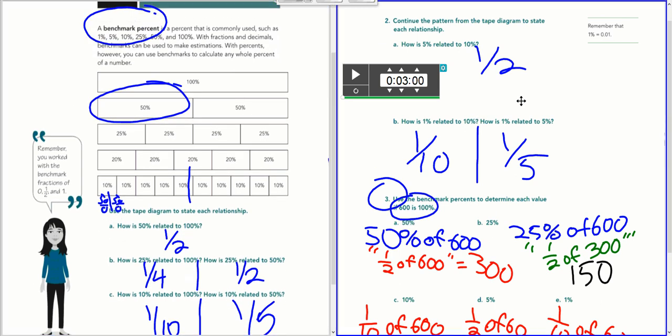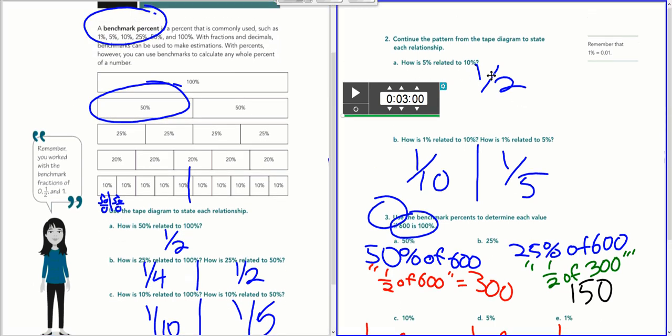And then we continued on with this. How is 5% related to 10%? Well, that's not over here, but you could continue to draw this picture. You could divide 10% into two pieces, 5% and 5%, and so it would be a half. 5% is half of 10%.